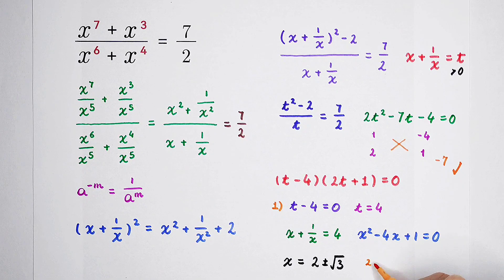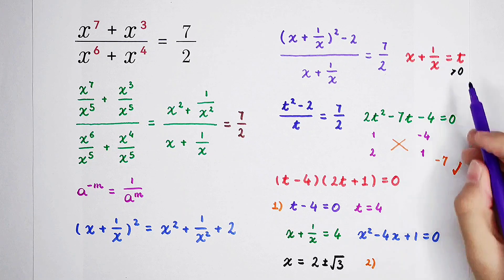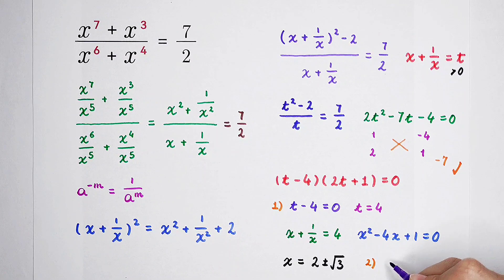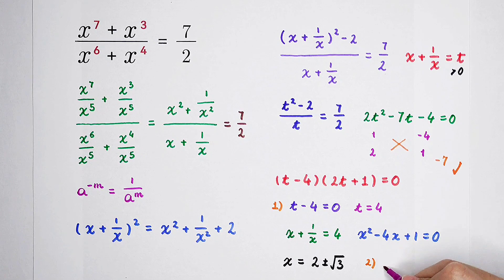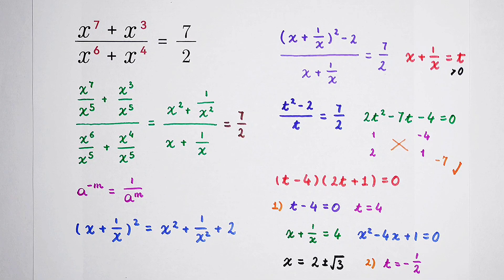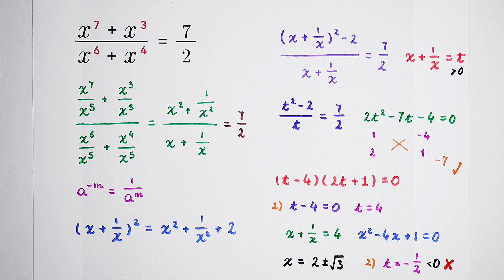We also have a second case: 2t plus 1 equals 0, so t equals negative 1 over 2. But we know t must be positive, and negative 1 over 2 is negative — so there are no real solutions from this case. Therefore, the only two real solutions are x equals 2 plus or minus square root of 3.